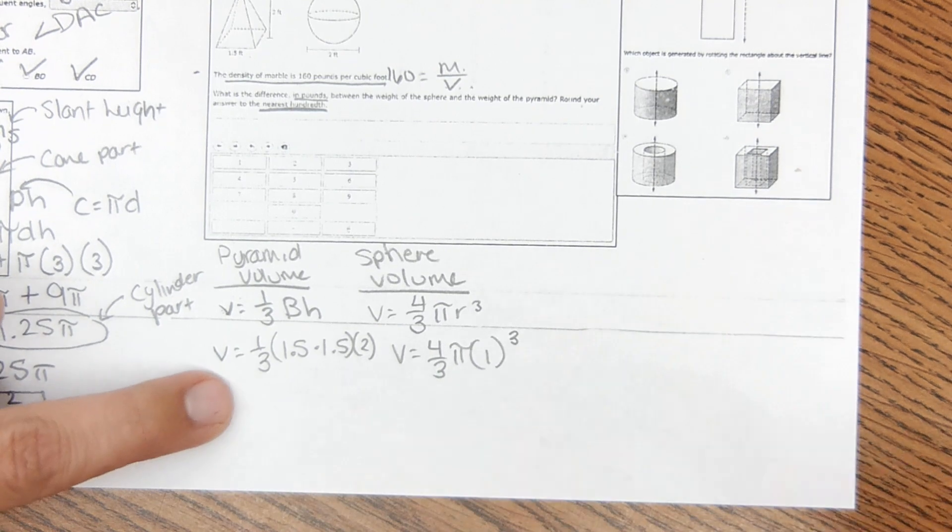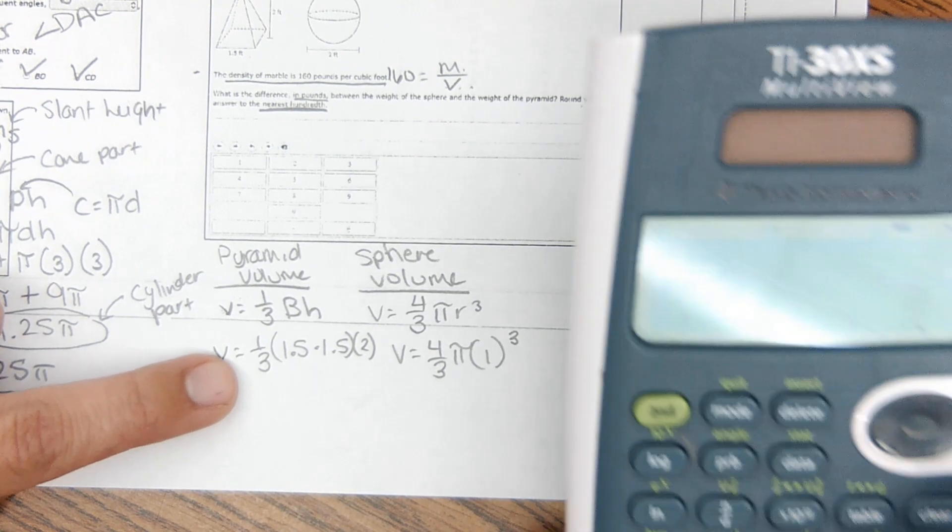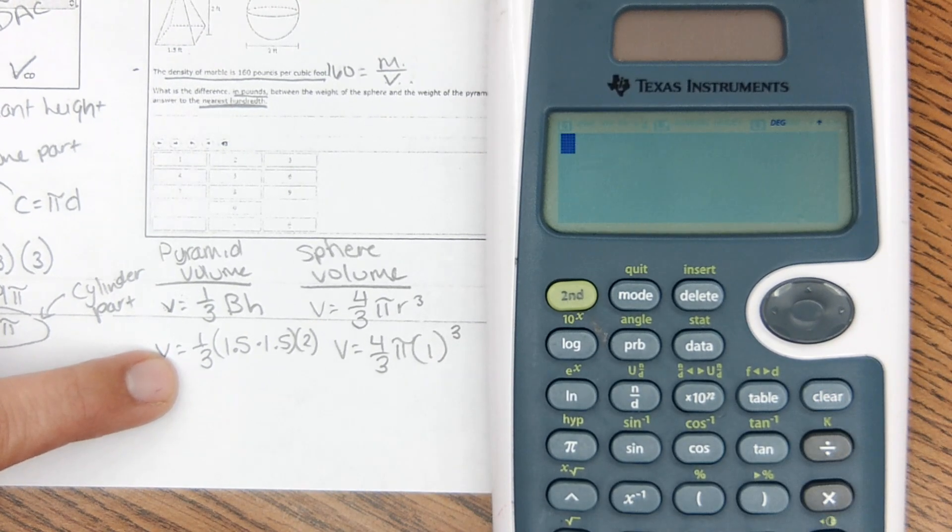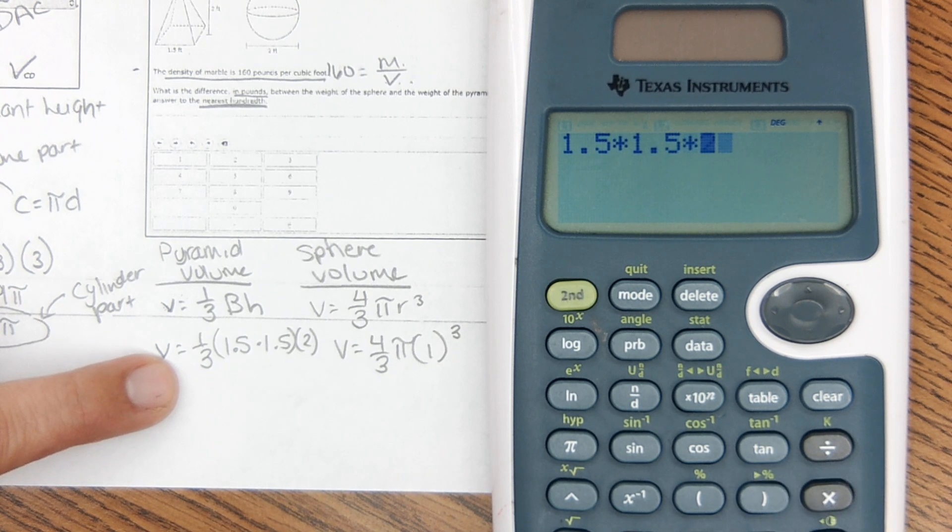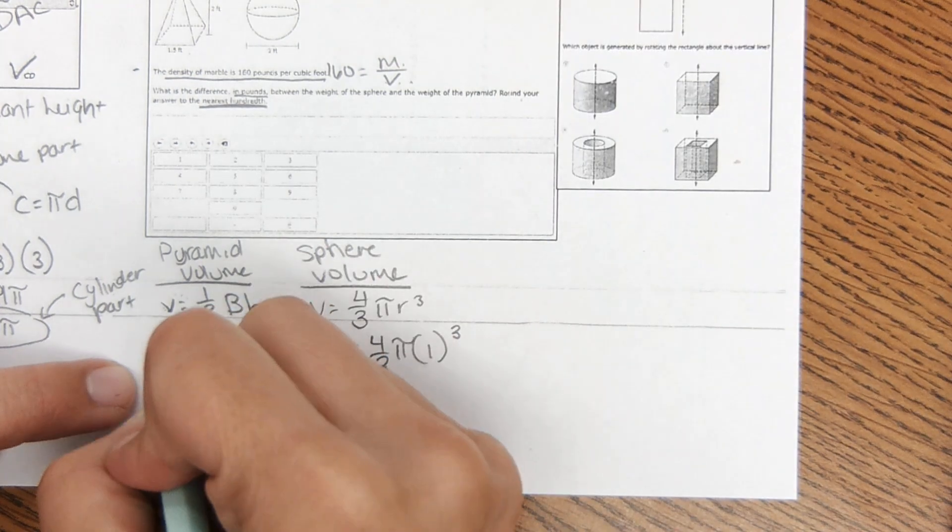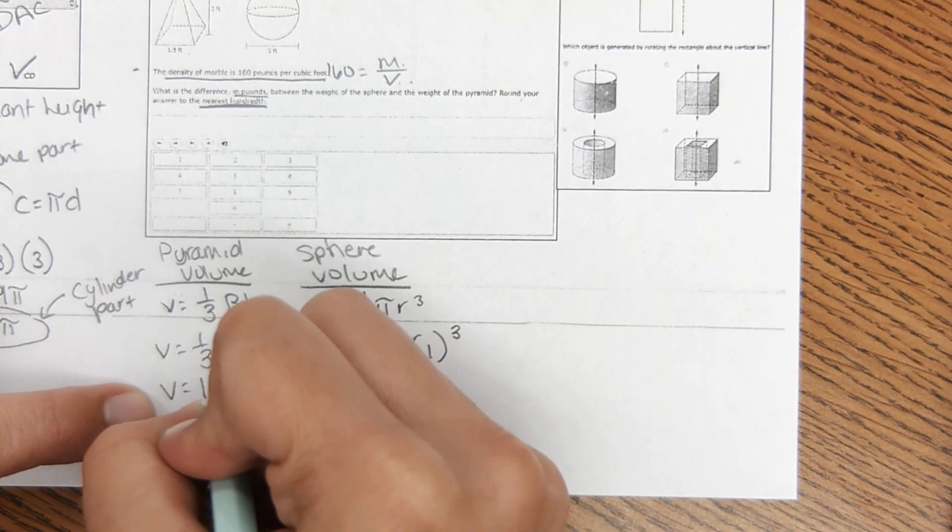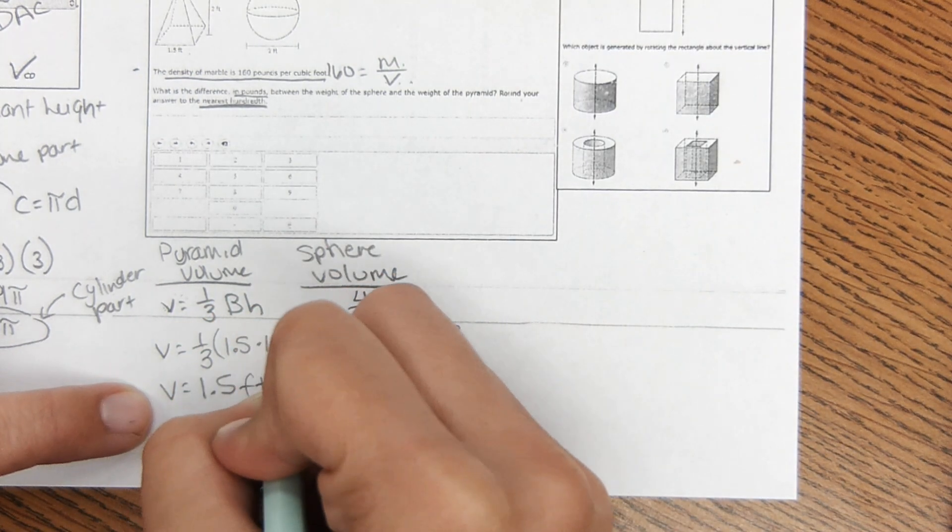And then solving these. So the volume of the pyramid is 1.5 times 1.5 times 1.5 times 2 divided by 3, 1.5. So the volume of the pyramid, 1.5 feet cubed.